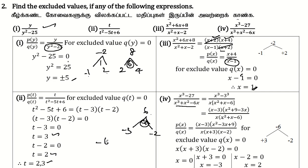Add 3 and add 1. Factor: x plus 3, x minus 2. So the excluded value denominator equals 0. x into x plus 3 into x minus 2 equals 0. x plus 3 equals 0 gives x equals minus 3. x minus 2 equals 0 gives x equals 2. The excluded values are 0, minus 3, and 2.